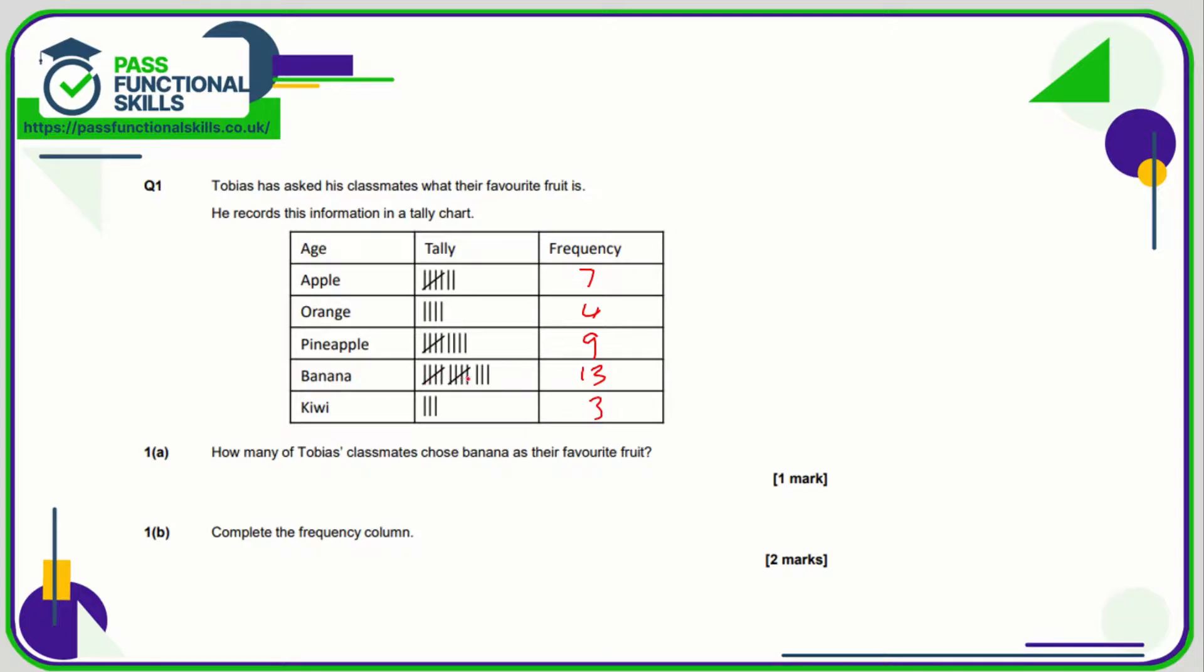So by stacking them in batches of five, you can see how easy it is to add up. So how many chose banana as their favorite fruit? That is thirteen. And to complete the frequency column, too late, I've done that already.